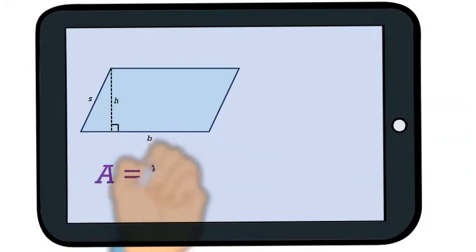The area of a parallelogram is also its base times its height. And remember the height is measured at a 90 degree angle. It's not the slanted side.